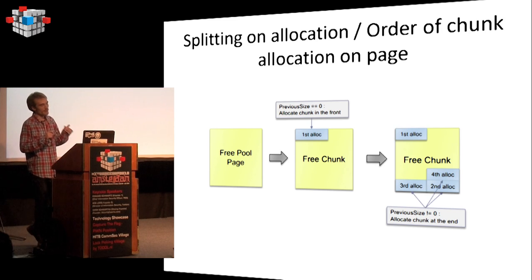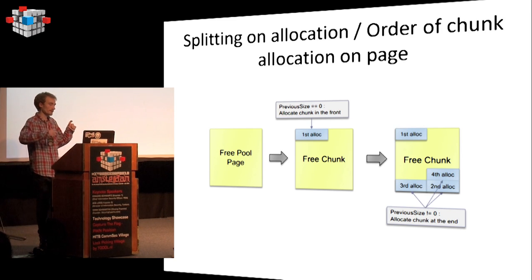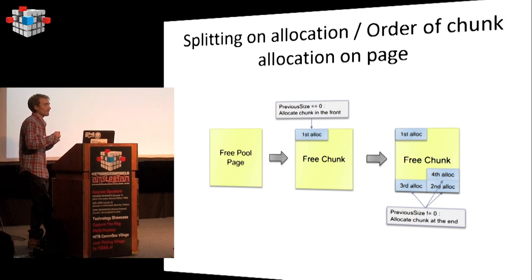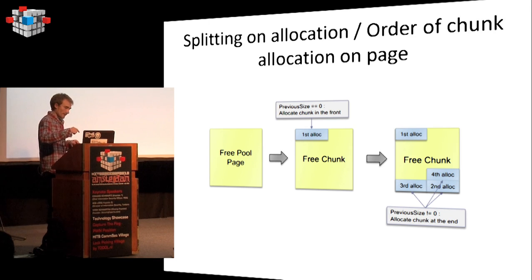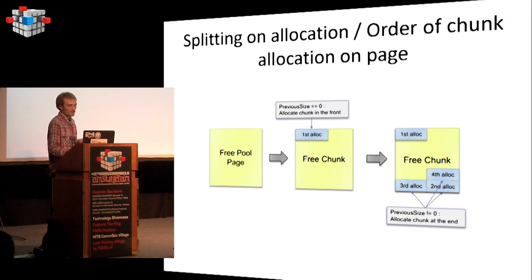One of the key points of this research is that the kernel pool allocator allocates the first chunk at the top, and subsequent allocations from the bottom. The chunk header of the first allocation has a previous size of zero, which will result in some interesting behavior I'll disclose a little bit later.